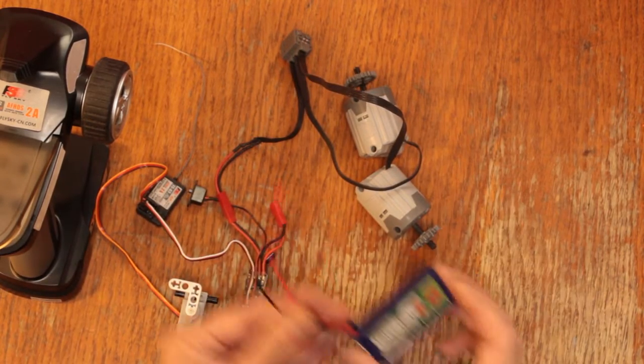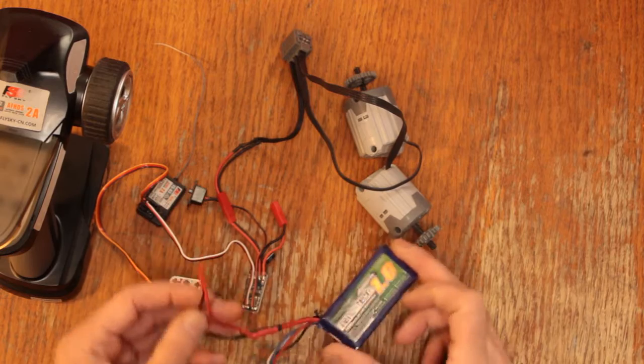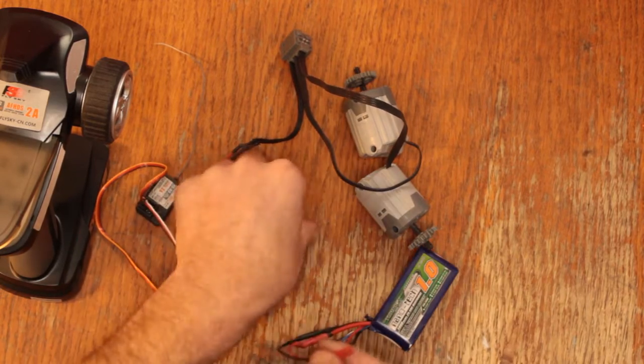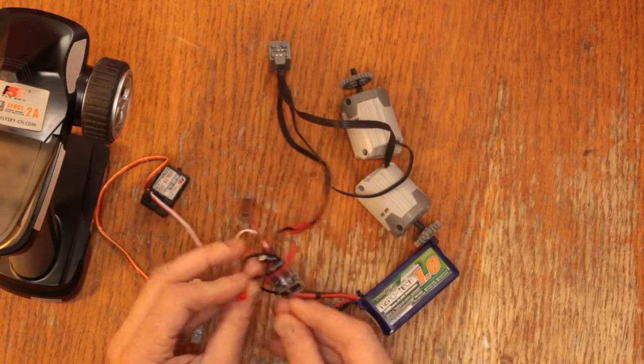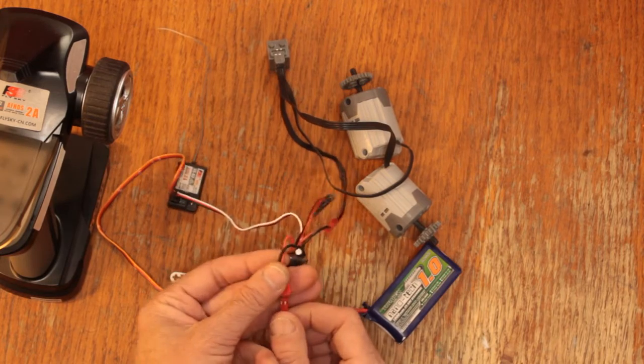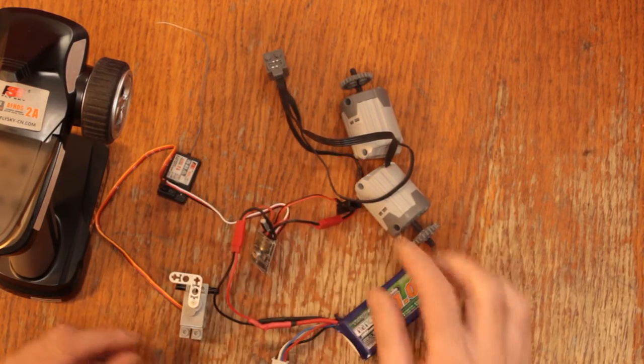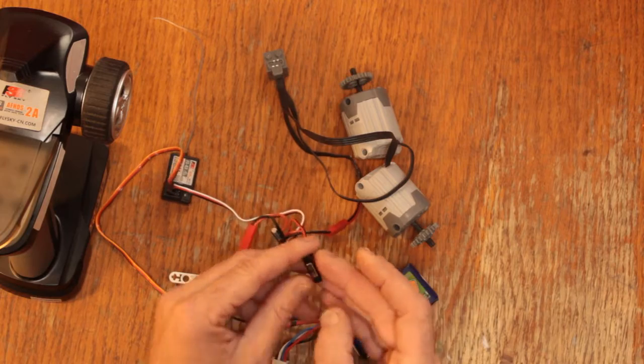And then last we've got our battery. This is a three cell battery. The ESC is supposed to be run on a two cell battery but I haven't had any trouble with the three cell. If you want to be on the safe side then you probably want to go with the two cell.